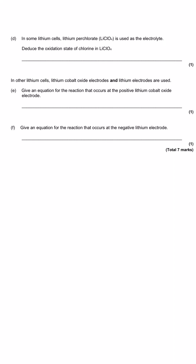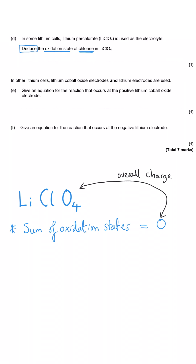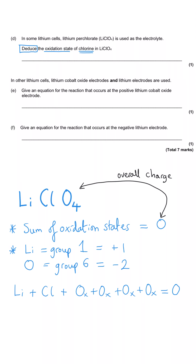Part D asks us to deduce the oxidation state of chlorine in LiClO₄. To find any oxidation state we use the rule that the sum of all oxidation states equals the overall charge. LiClO₄ has no charge, so they add up to zero. Lithium is group 1, so its oxidation state is +1; oxygen is group 6, so it is −2. Setting up the equation: +1 + Cl + 4(−2) = 0, giving +1 + Cl − 8 = 0, so chlorine must be +7.